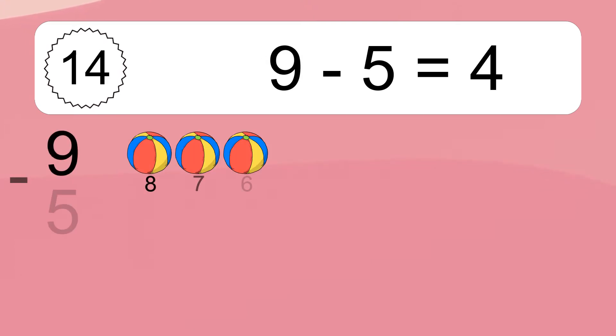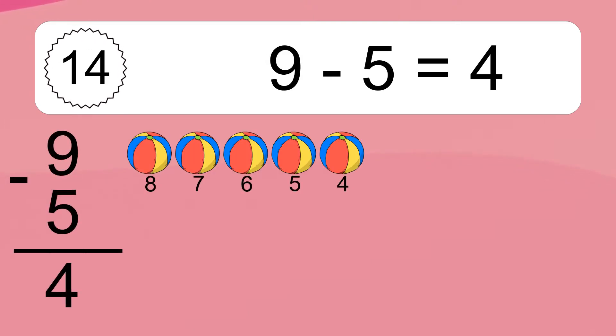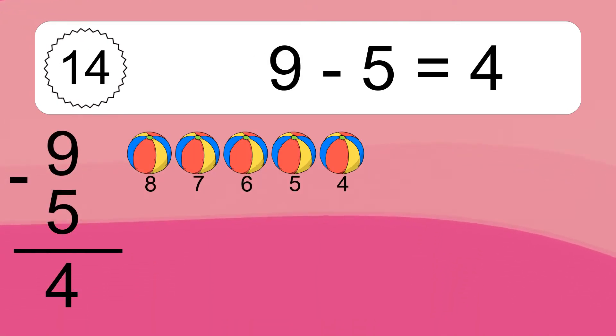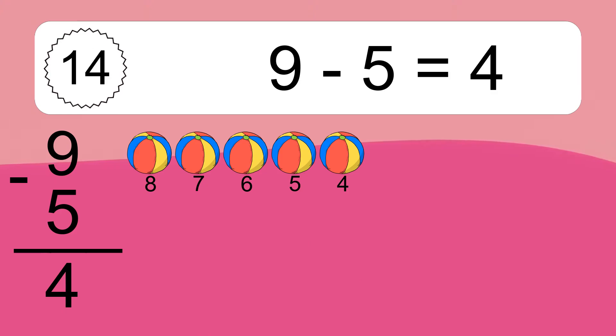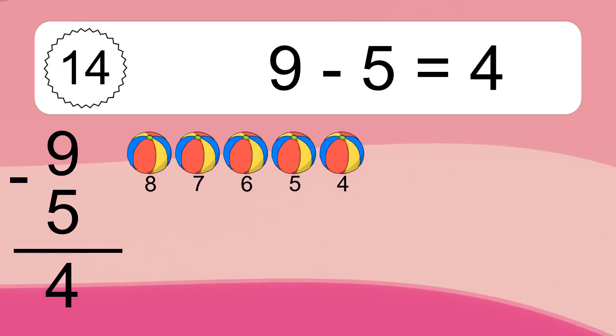9 minus 5 equals what? 9 minus 5 equals 4. Let's count it: 8, 7, 6, 5, 4.